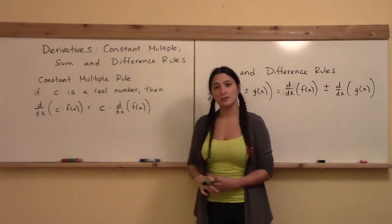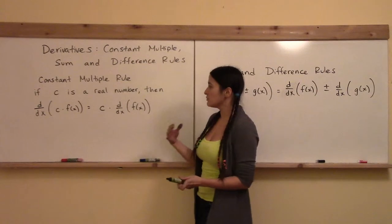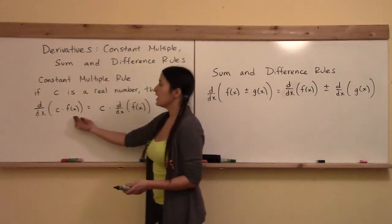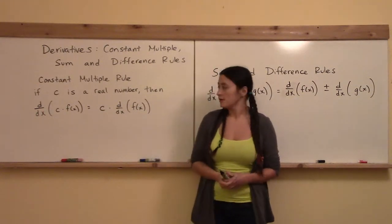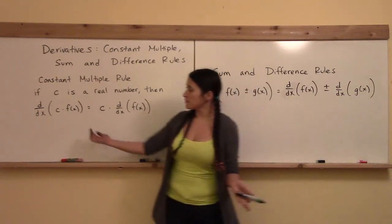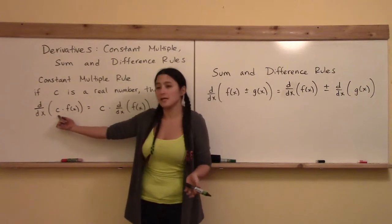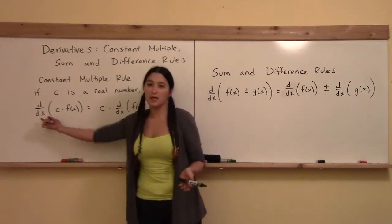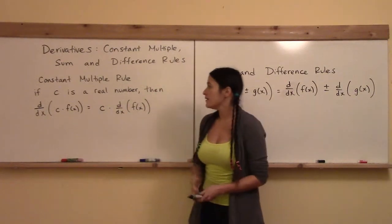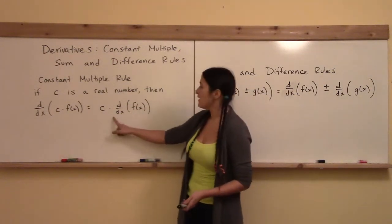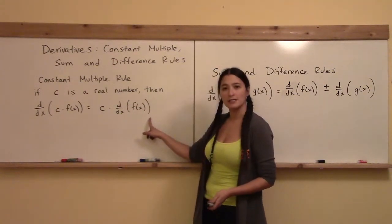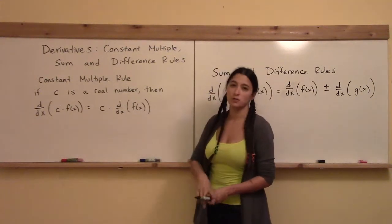We'll start with the constant multiple rule, which talks about when you take a function f(x) and multiply it by any constant multiple c, where c is some real number. If we want to take the derivative of that, all we have to do is take the c and move it to the outside, and then take the derivative of f(x). So the constant multiple gets moved to the outside.